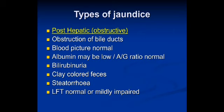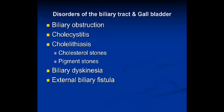Post-hepatic or obstructive jaundice is caused by obstruction of the common bile ducts — most often by tumors or gallstones. The blood picture is normal. Conjugated bilirubin increases in the blood, albumin may be low, and the AG ratio is normal. There is clay-colored (pale) feces, steatorrhea with bulky stools. Liver function tests are normal or mildly impaired.